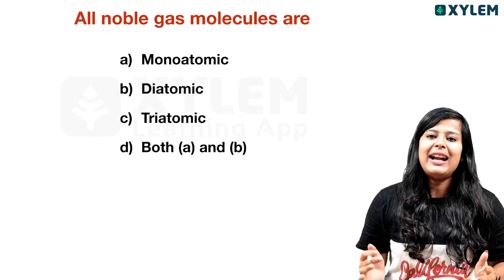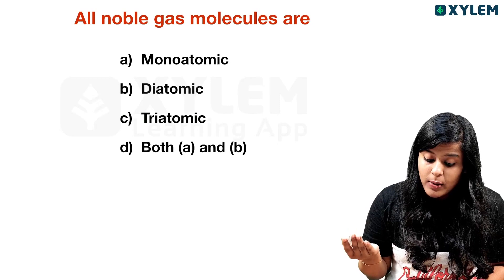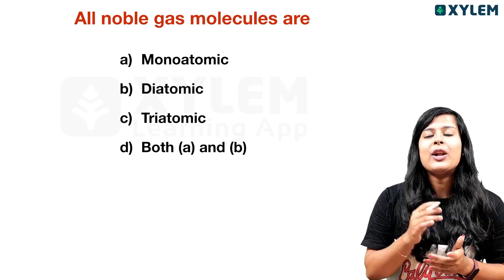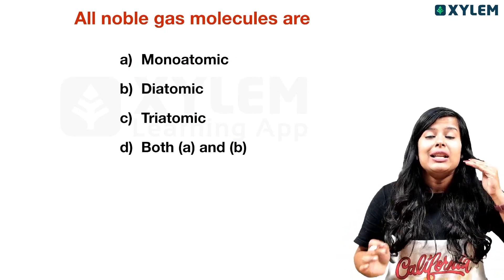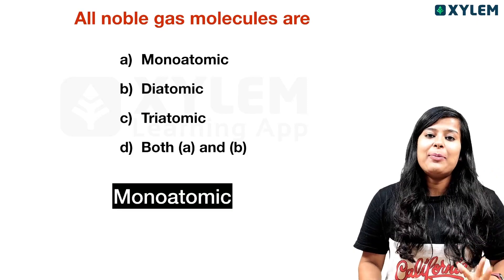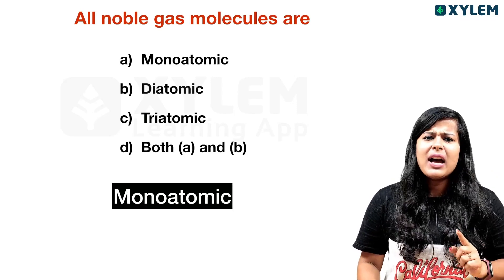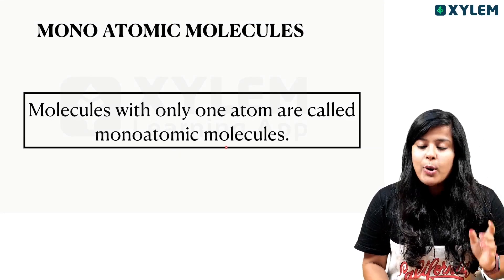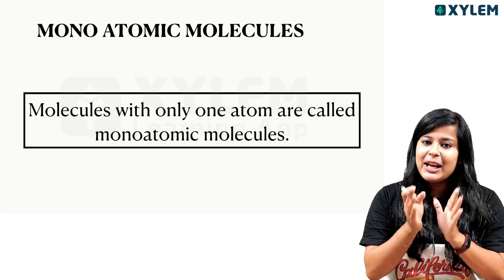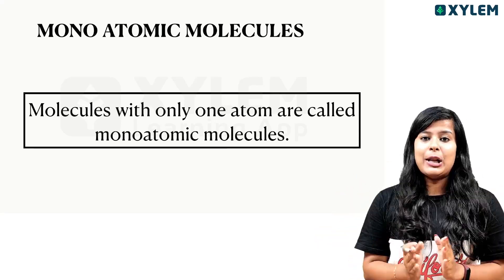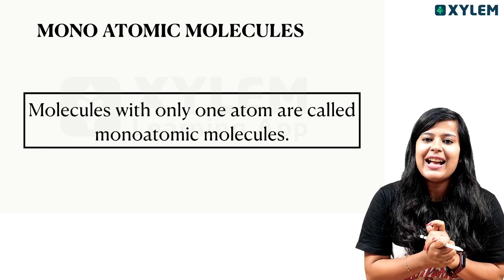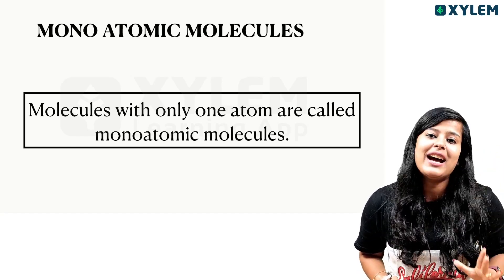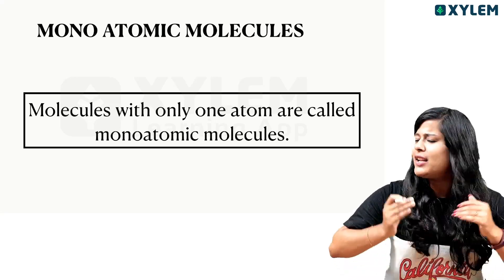The next question is: all noble gas molecules are — mono-atomic, diatomic, triatomic, or both A and B? The answer is mono-atomic. A mono-atomic molecule is a molecule with only one atom. Noble gases — helium, neon, argon, krypton, xenon, and radon — are all mono-atomic molecules.